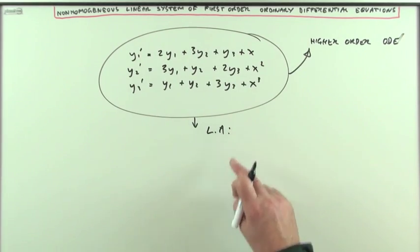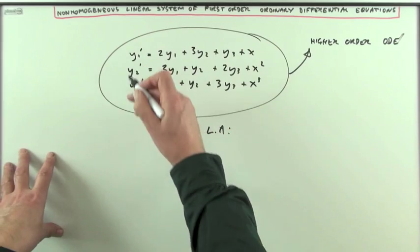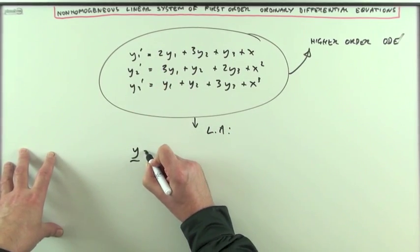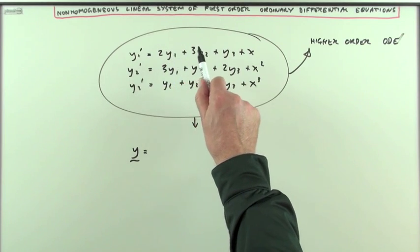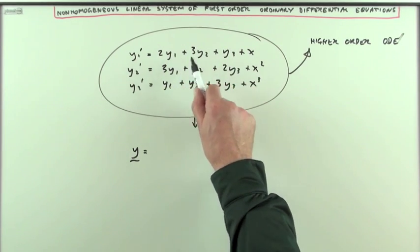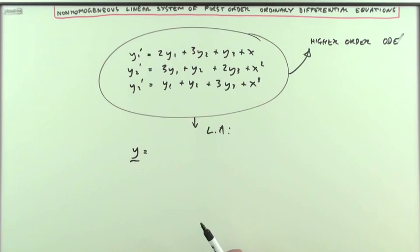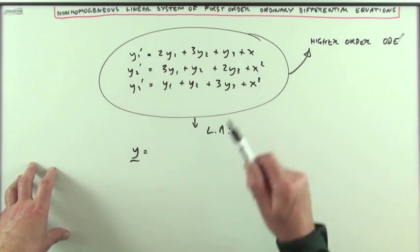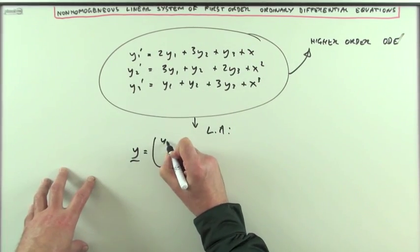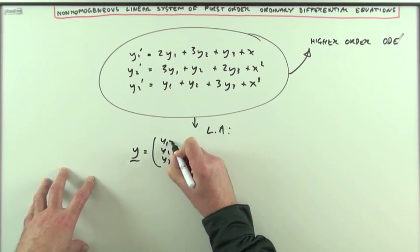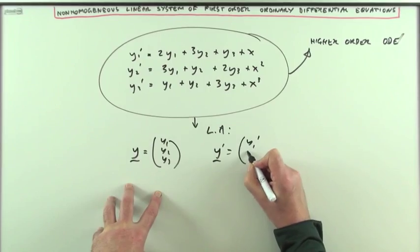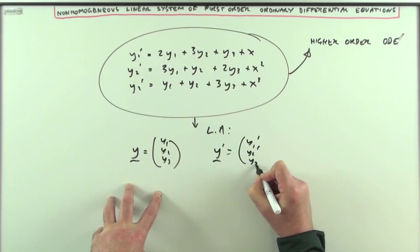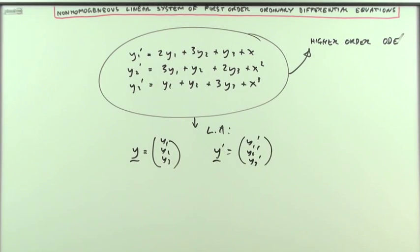The technique for the linear algebra would be: I've got this system, if I create a vector Y made up of Y1, Y2 and Y3, those being the three separate functions all of a single variable X. If you take Y as Y1, Y2, Y3, so that Y dashed would be Y1 dashed, Y2 dashed, Y3 dashed, then you can form this system.